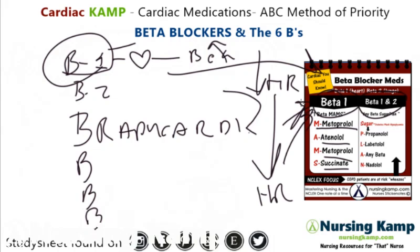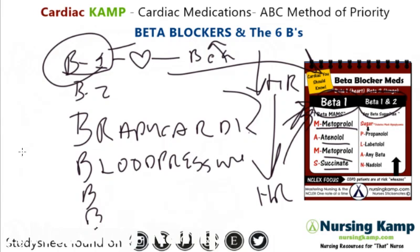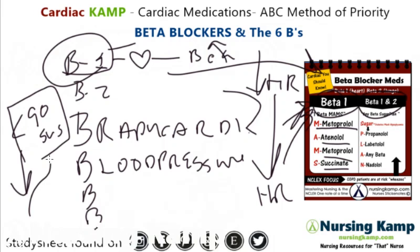Beta blockers also affect blood pressure, which is our second B. We monitor blood pressure in patients on beta blockers because of their risk for hypotension, and we generally hold if the systolic is less than 90. Follow your hospital policy as that threshold may differ per facility. Blood pressure and apical pulse should be monitored prior to administration.